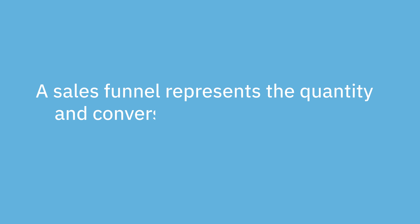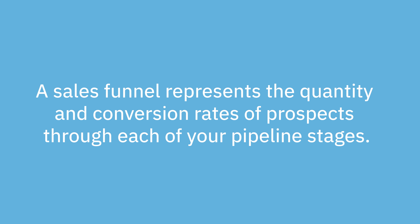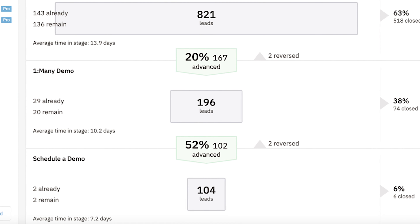Now let's talk funnels. A sales funnel represents the quantity and conversion rates of prospects through each of your pipeline stages. For example, of the 100 leads you received last month, what percentage advanced from the qualify stage to the present stage? What percentage advanced to the closing stage? It's called a funnel because of its shape — wide at the top as prospects enter, then increasingly narrow as they become disqualified or decide not to buy at each stage. Many CRMs offer funnel reports that crunch these numbers for you, helping sales managers identify where deals are getting stuck so they can improve their process and better coach their team.